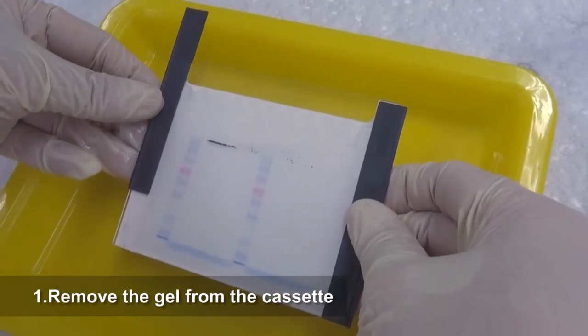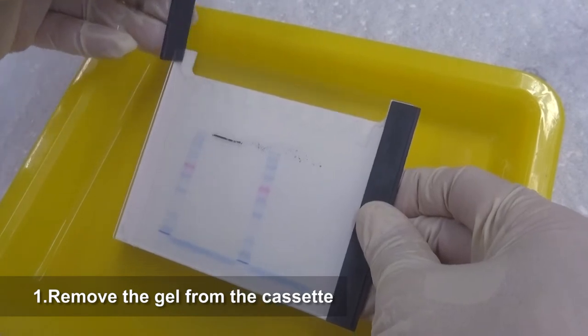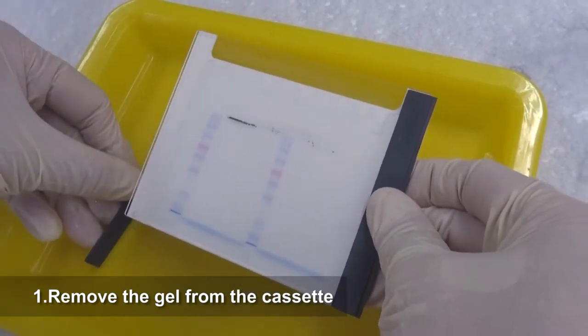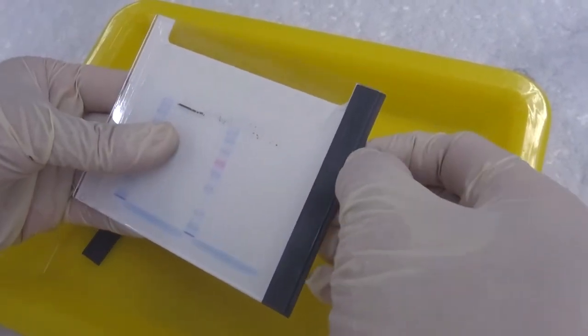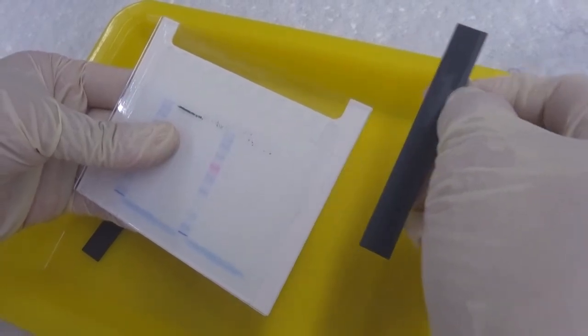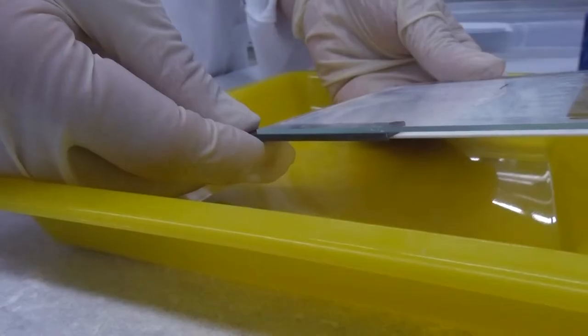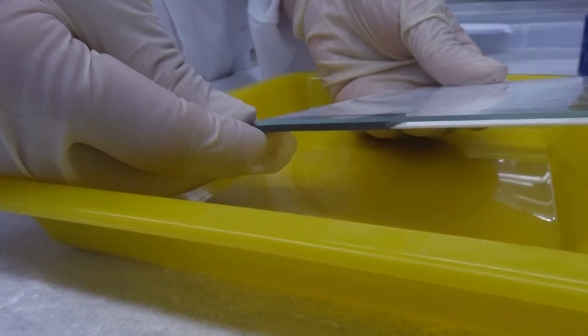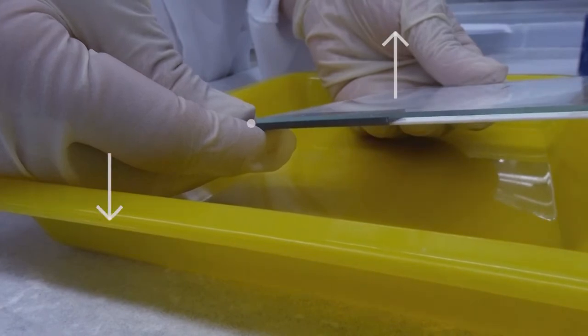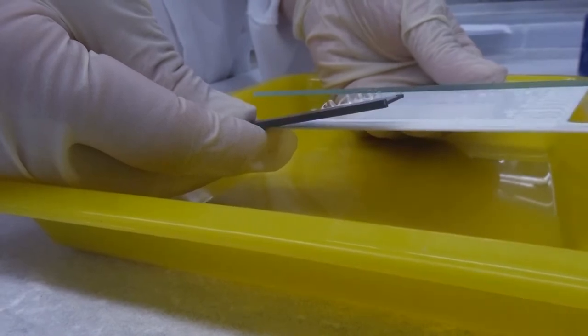Remove the gel from the cassette. First, carefully push out two spacers from the gel cassette sandwich to create some space at both sides of the gel. Insert one spacer into a corner between the plates and use this as leverage to slowly separate and remove the glass plate.